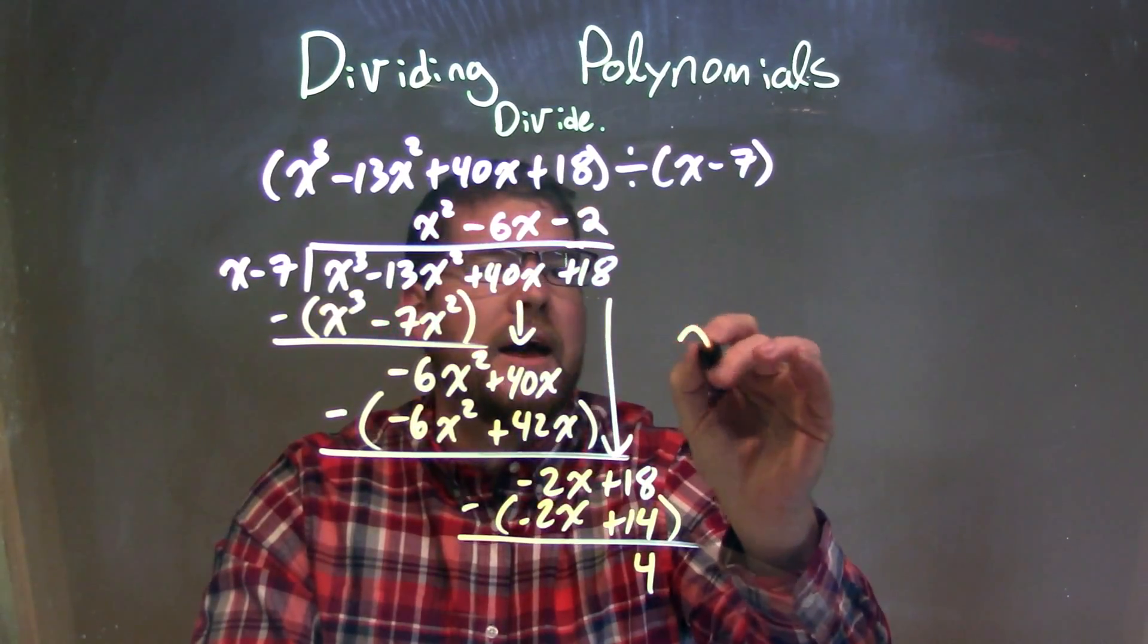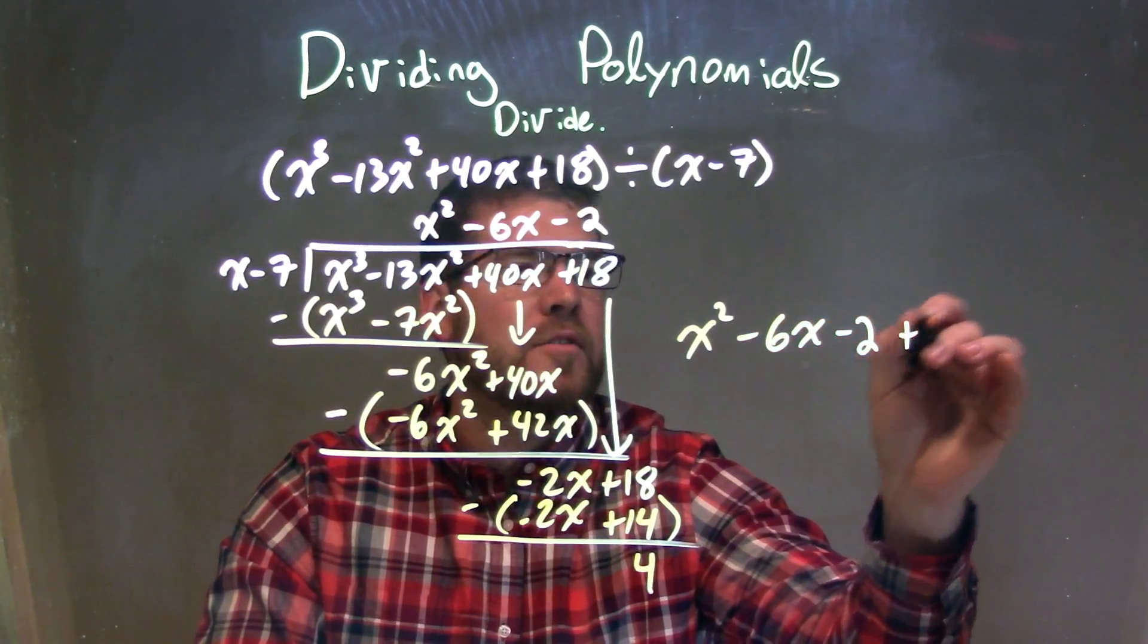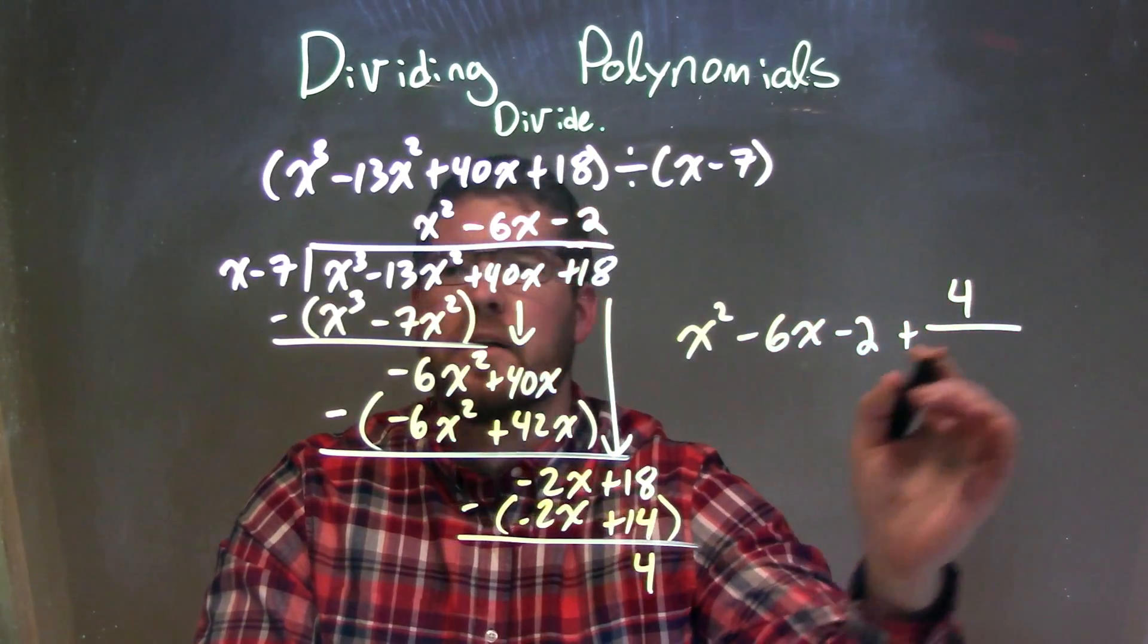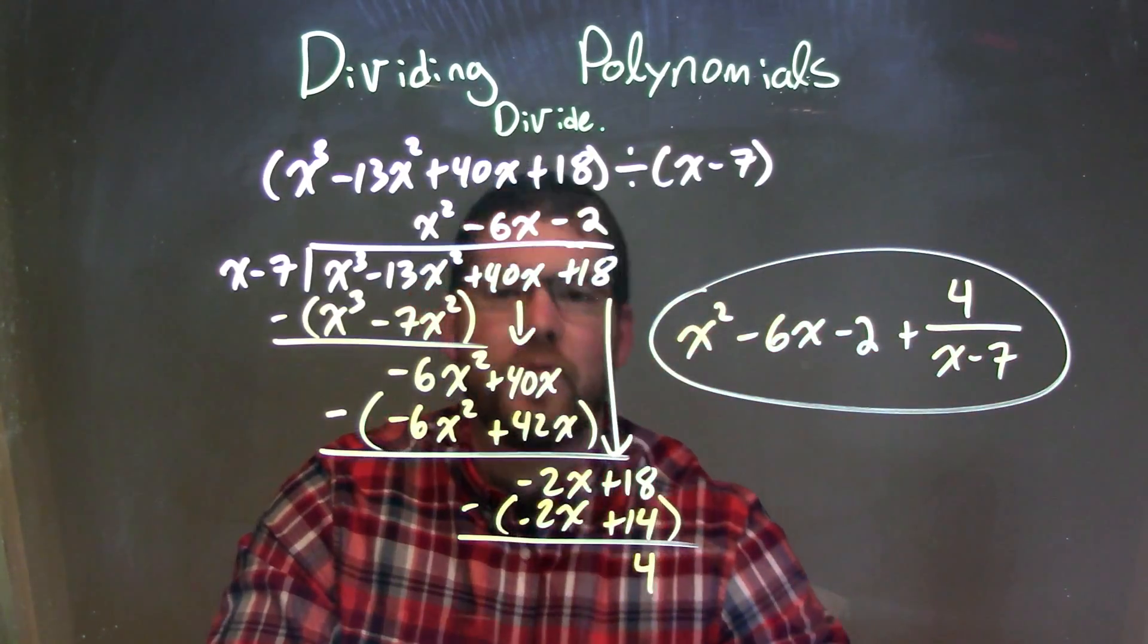And so my final answer - I just rewrite what's up here - my x squared minus 6x minus 2, plus my remainder, which is 4, over my divisor, which is x minus 7. And that is my final answer.